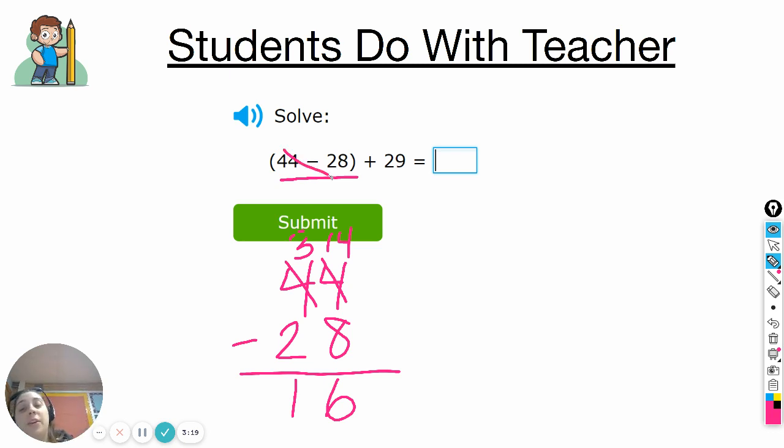But that's not the answer I type in IXL because I have not finished. I did figure out that this part of the equation equals 16, but I still need to add 29. So, I'm going to take the 16, which is the answer I just figured out from the parentheses, and I'm going to add it to 29. Notice my 2 is right below my 1, and my 9 is right below my 6.